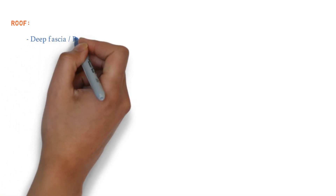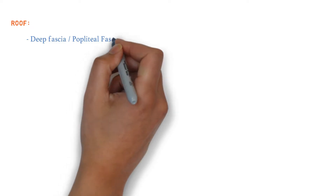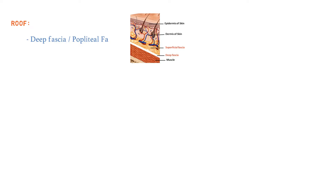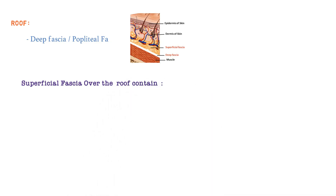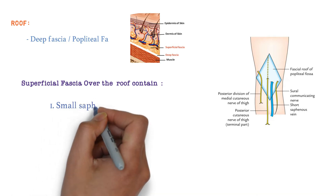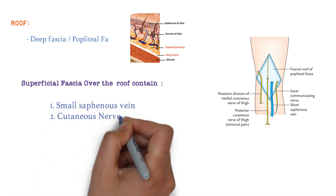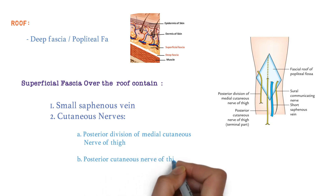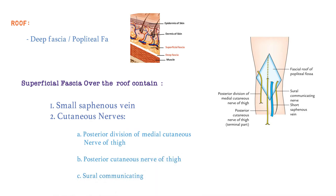Now we are going to talk about the roof of Popliteal Fossa. The roof is made up of deep fascia, which is also called popliteal fascia. In our body, the outermost part is skin; just below the skin we have superficial fascia, and below that we have deep fascia. This deep fascia is the roof of Popliteal Fossa. Just above this deep fascia, in the superficial fascia over the roof, we have the small saphenous vein and three cutaneous nerves: the posterior division of the medial cutaneous nerve of the thigh, the posterior cutaneous nerve of the thigh, and the sural communicating nerve.